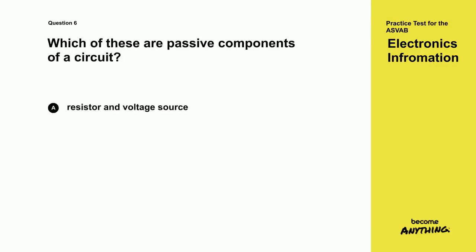Question 6. Which of these are passive components of a circuit? A. Resistor and voltage source. B. Resistor and coil. C. Condenser and current source. D. Coil and current source.